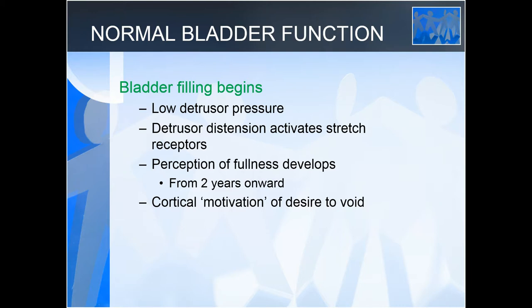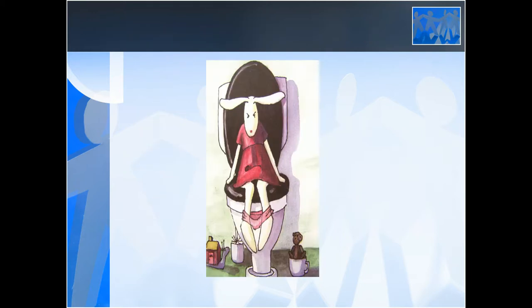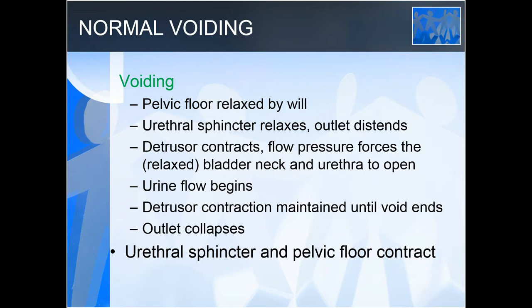When you void, the pelvic floor relaxes, the urethral sphincter relaxes, and the whole outlet distends. Nothing will happen unless the detrusor contracts, or you use lots of intra-abdominal pressure to push the urine out. After the detrusor has finished contracting, the whole outlet collapses and the urethral sphincter and pelvic floor return to their resting pressure of being contracted. This is how it should work.